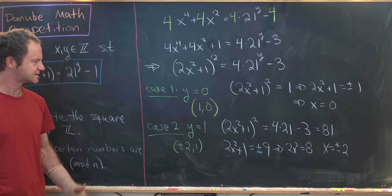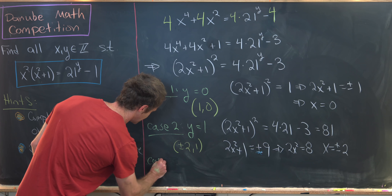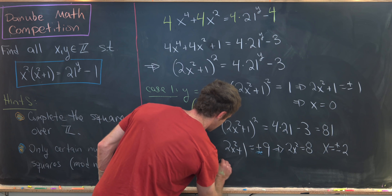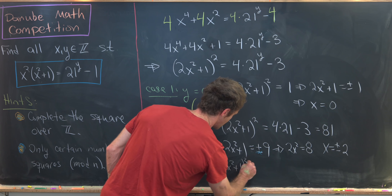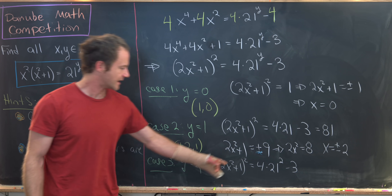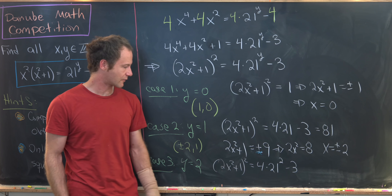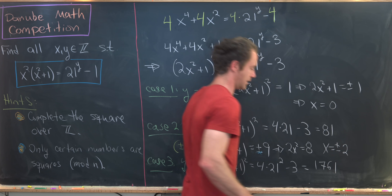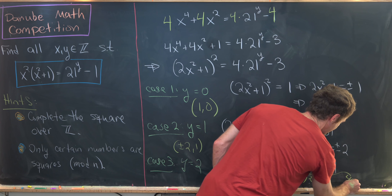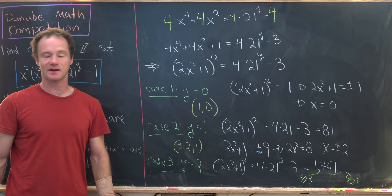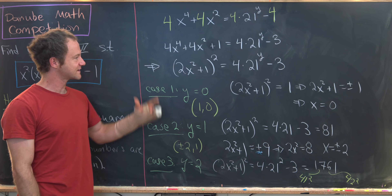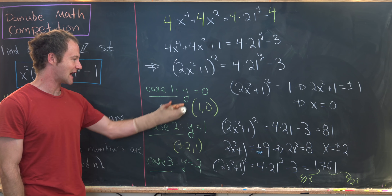Case 3: y equals 2. Then 2x squared plus 1, quantity squared, equals 4 times 21 squared minus 3. Calculating that gives 1761. You can check that 1761 is between 41 squared and 42 squared, so it is not a perfect square. Since we need the right hand side to be a perfect square, this case gives no solution.